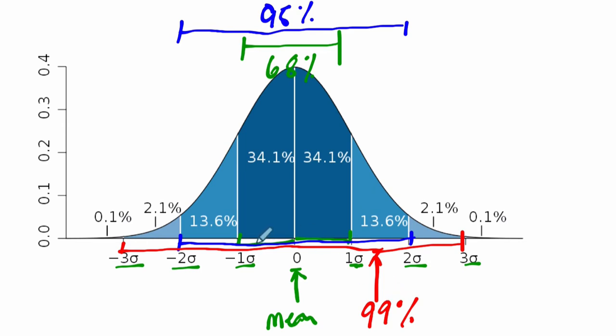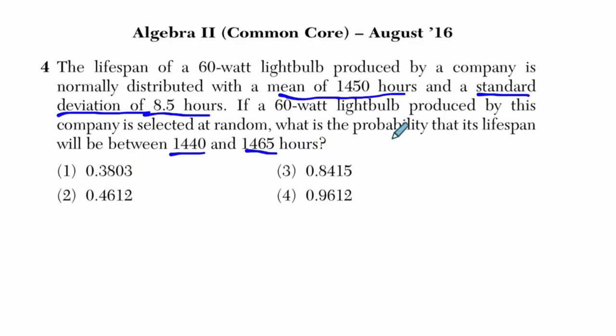Now those are approximations. These approximations are really helpful when we have exactly one or two standard deviations. But if we look at our problem, the standard deviation is 8.5 hours and the mean's 1450. So if I add one standard deviation, 8.5, and do it twice, that's 1450 plus 17, so 1467. But we're going to 1465, which is not exactly some whole number amount of standard deviations.